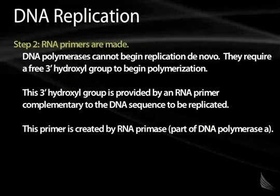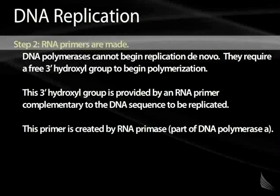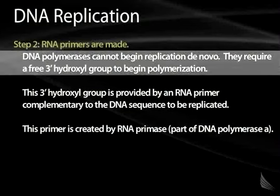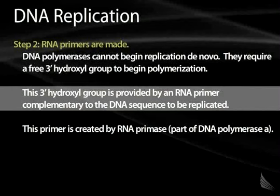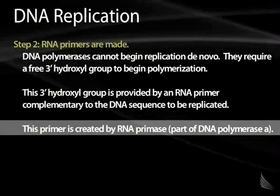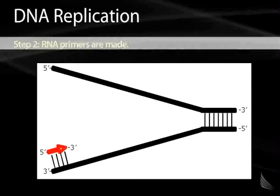The second step of DNA replication, once we've unwound the double helix and broken those hydrogen bonds, is that we have to make RNA primers. DNA polymerases cannot begin replication de novo — they can't begin without a previous 3' hydroxyl group present. That 3' hydroxyl group is provided by an RNA primer, which is complementary to the DNA sequence being replicated. This primer is created by an enzyme called RNA primase. In mammalian cells, RNA primase is part of DNA polymerase alpha.